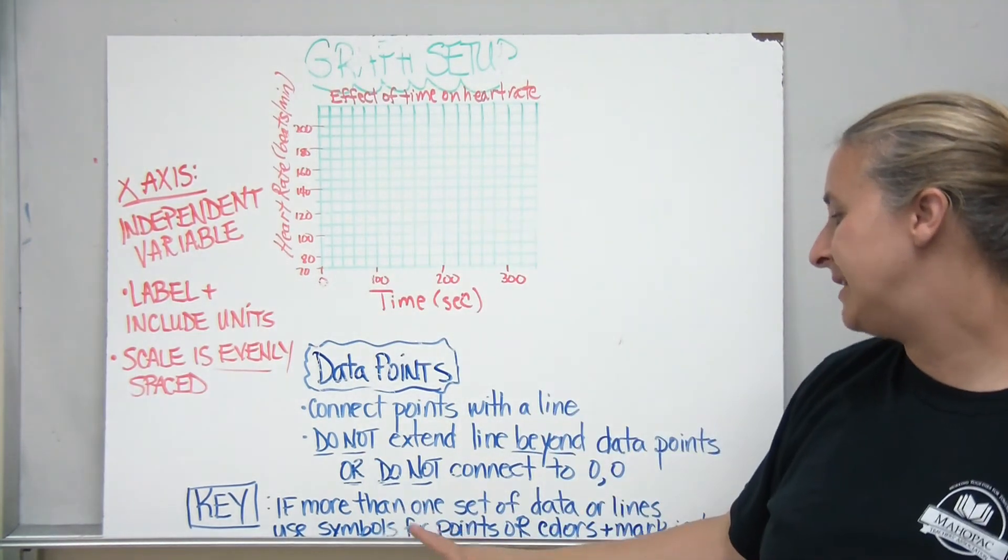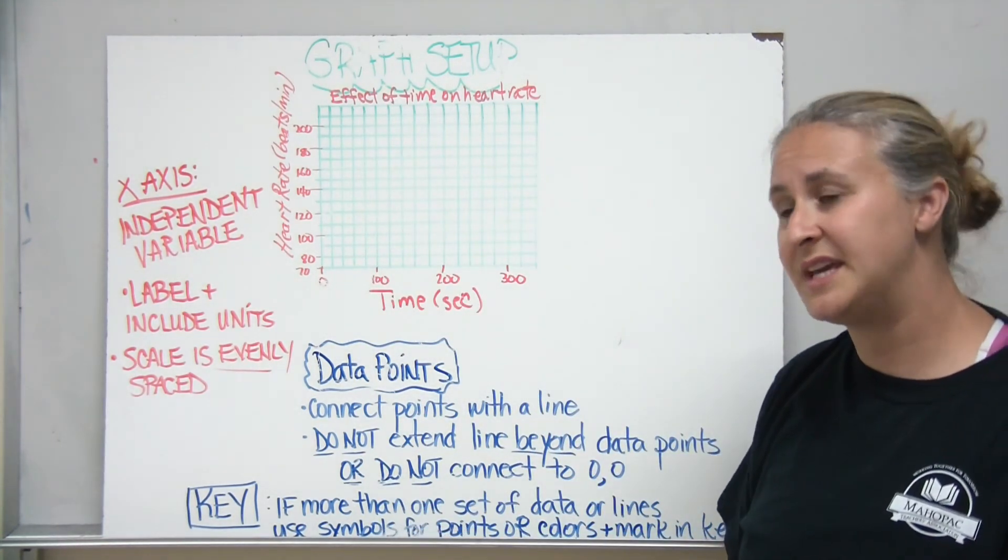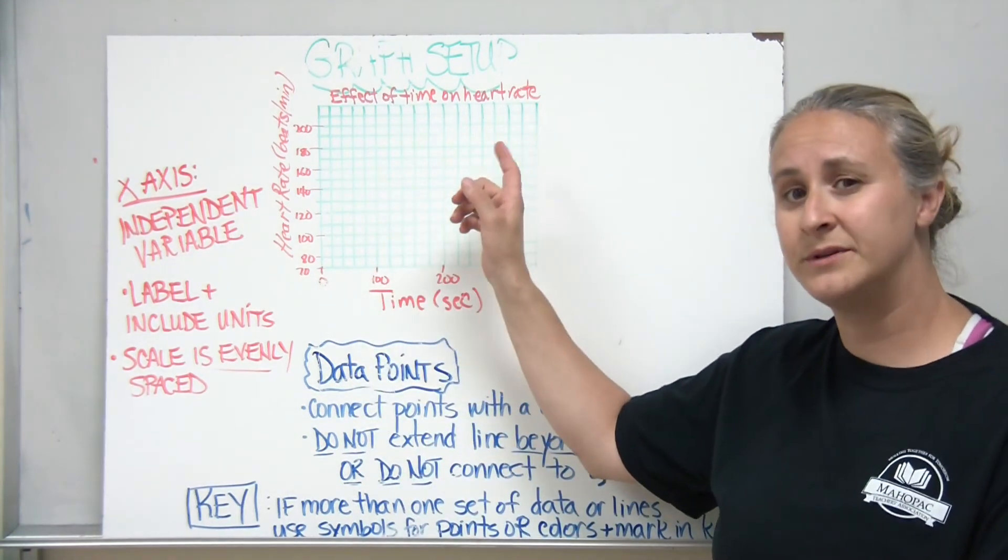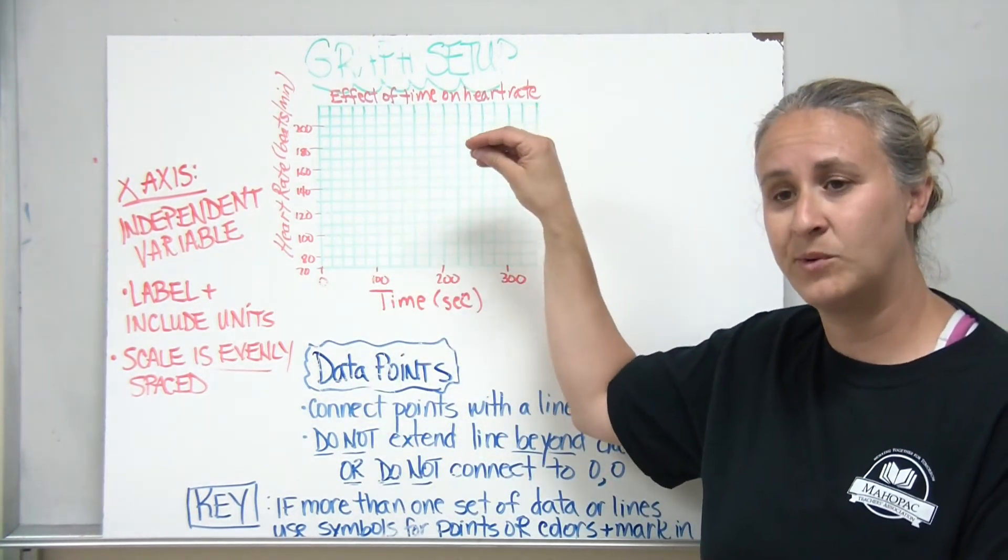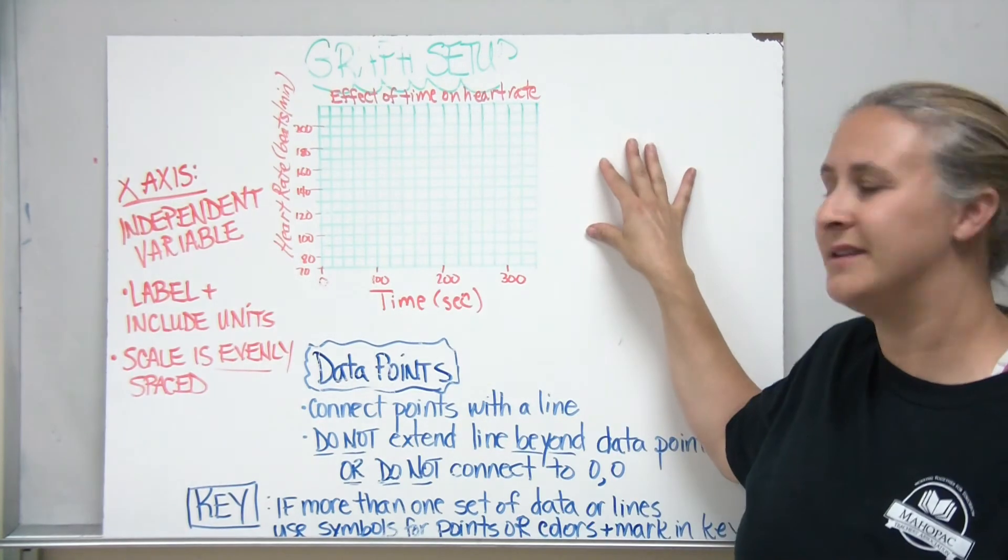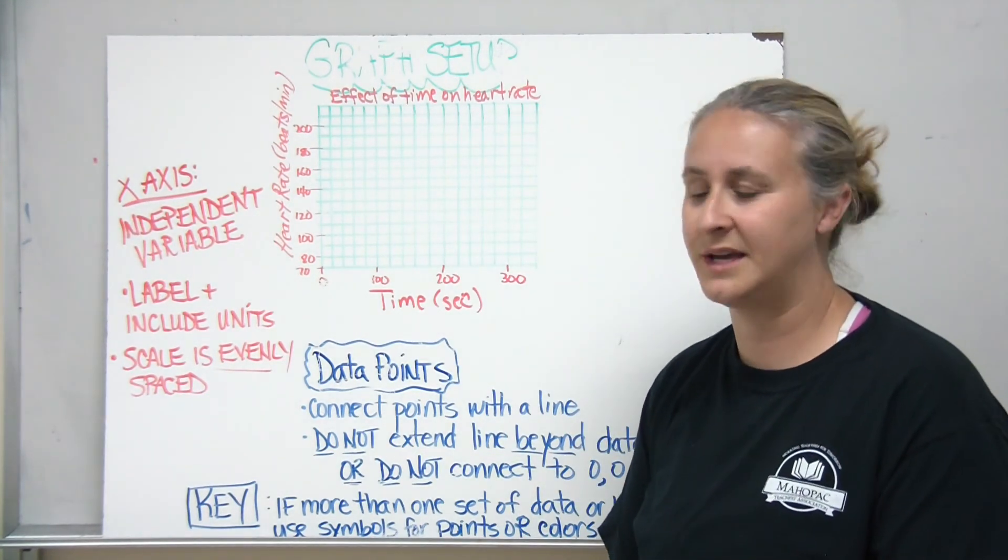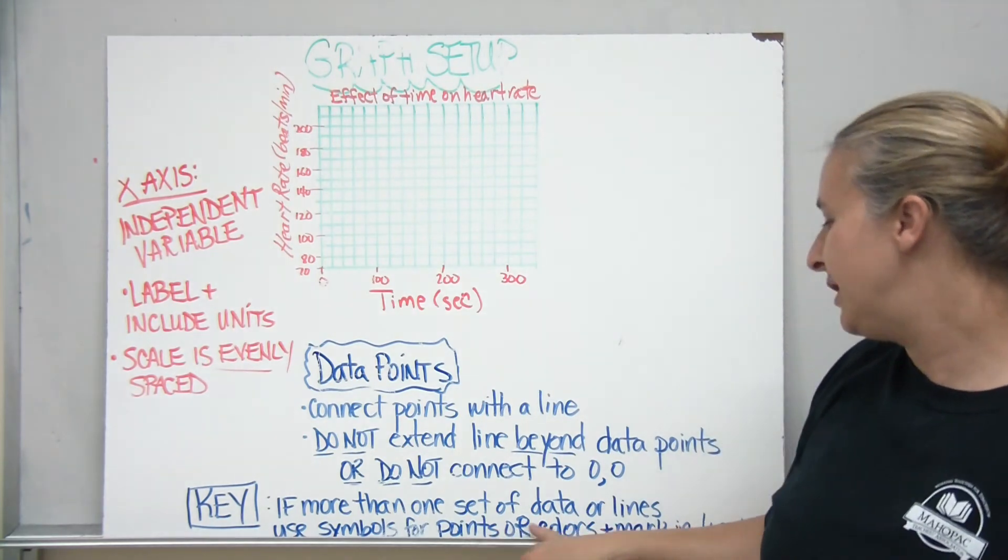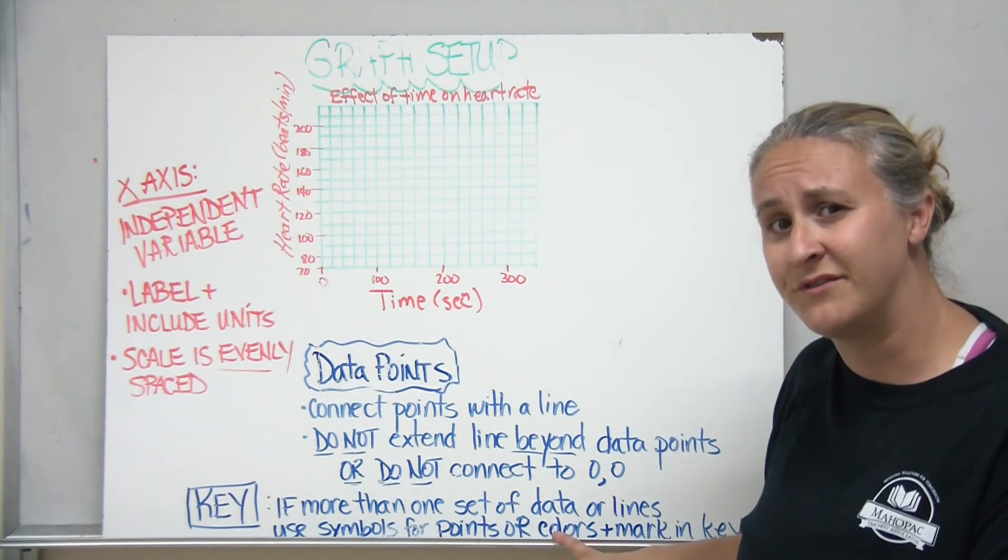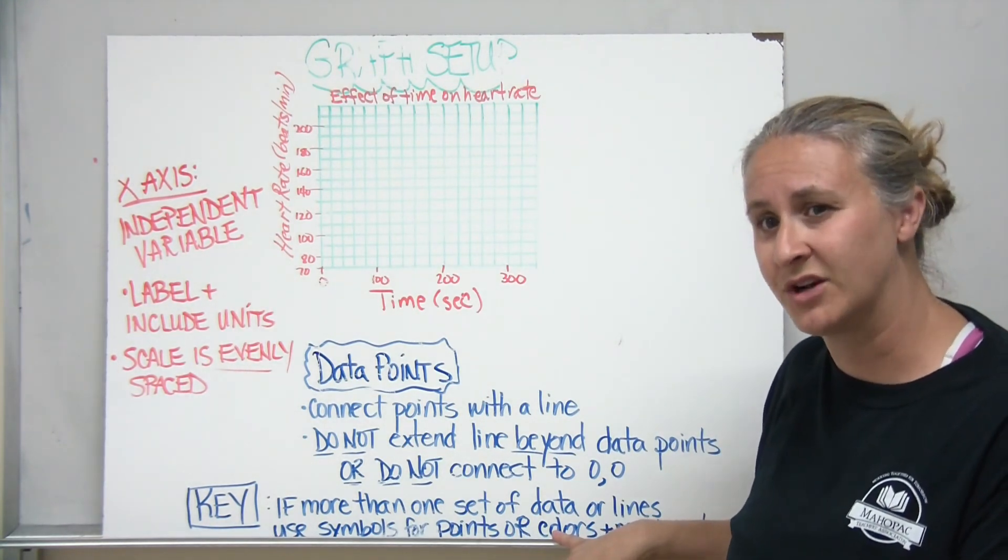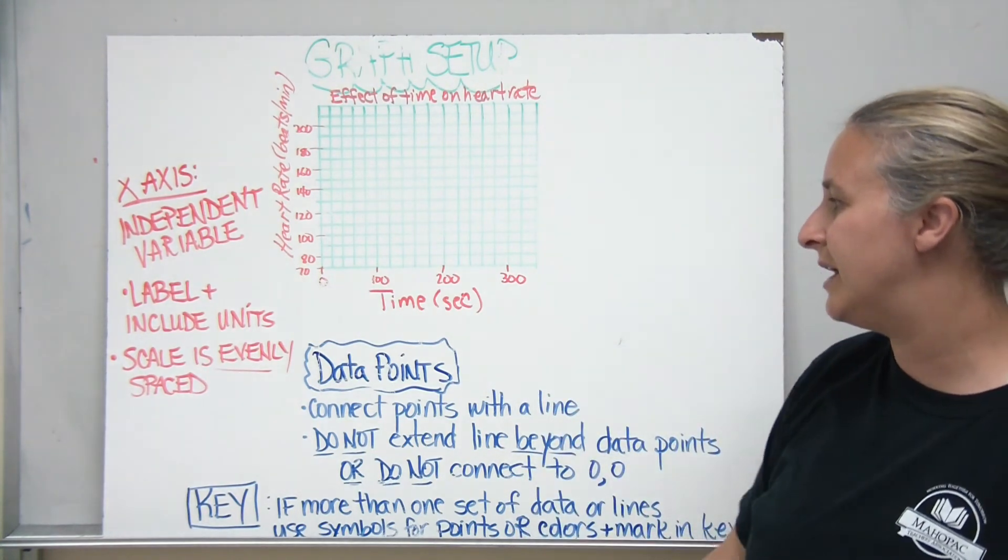A couple of things to keep in mind is that if you have more than one line of data, you could use different symbols for each set of points and then have a key on the side to say which of those points go to which set. You could also use different colors if you happen to have the advantage of using different colors. Just make sure you include that in the key.